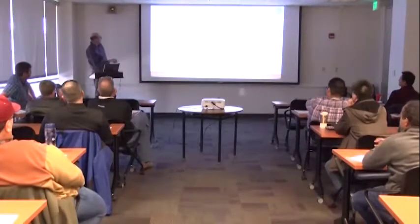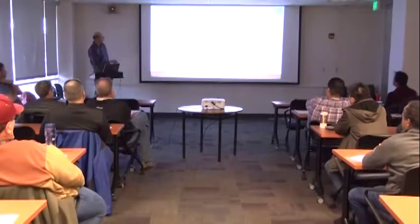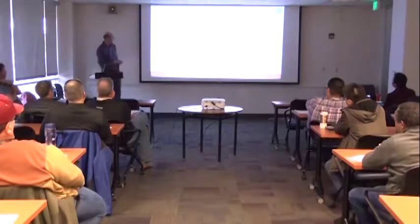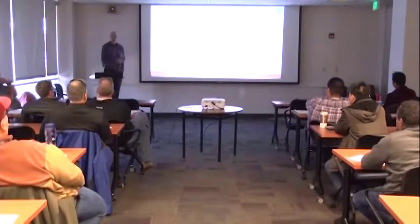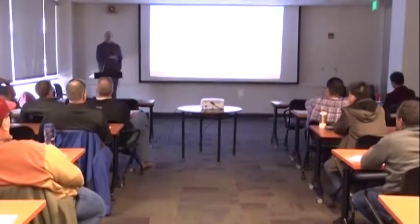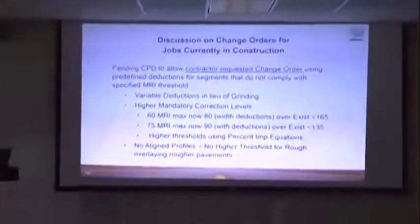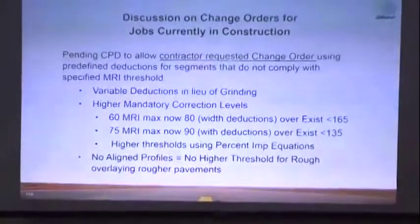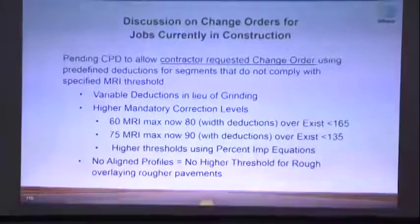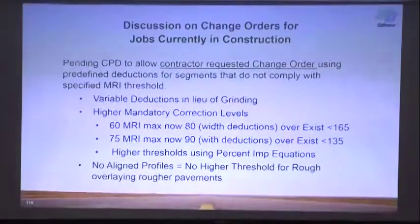If a contractor has a target 75 job with existing pavement under 135, it's a straight deduction. For example, if they got a 90 MRI, the state would accept it but take back the maximum deduction. If they got an 80, the state would accept it with a prorated deduction — 5/15ths of the deduction amount. If the existing profile and contractor profile can't be aligned and they can't agree on the over-135 condition, the worst case is they could fall back to the 75 case with a deduction opportunity.